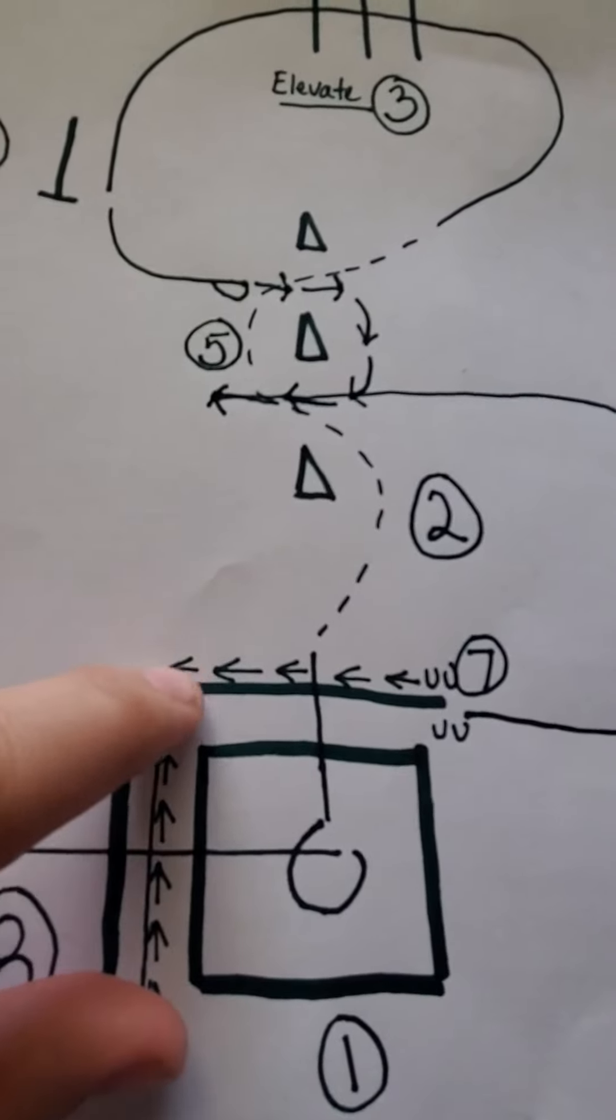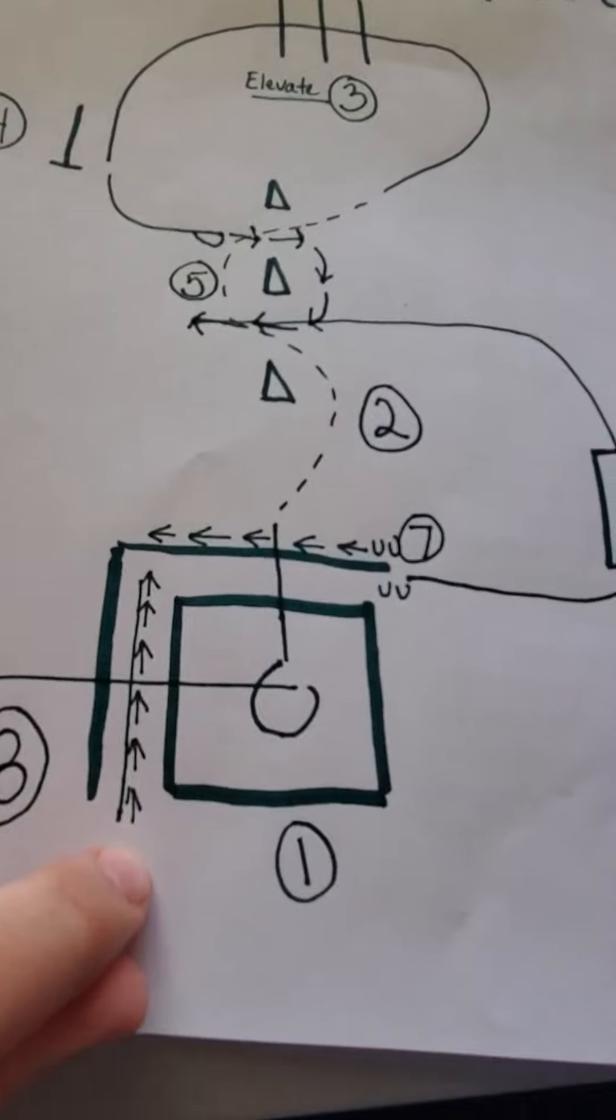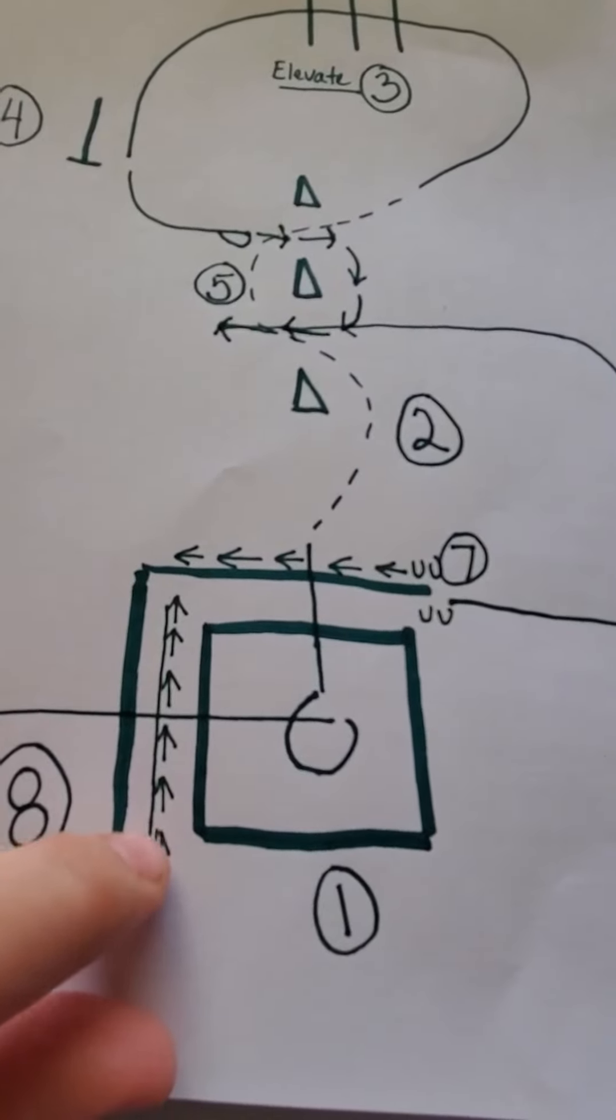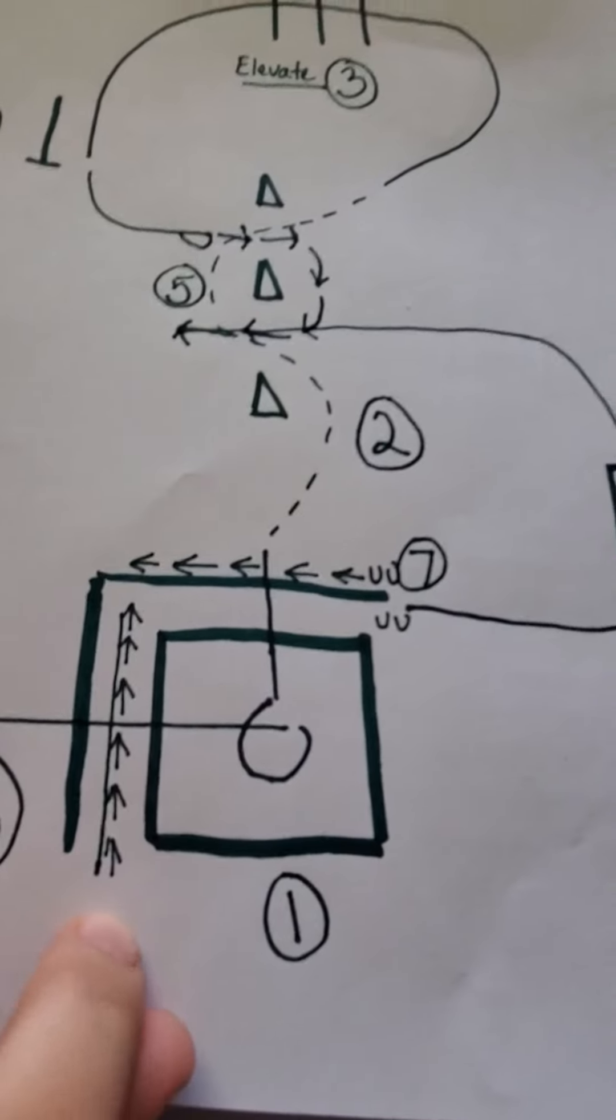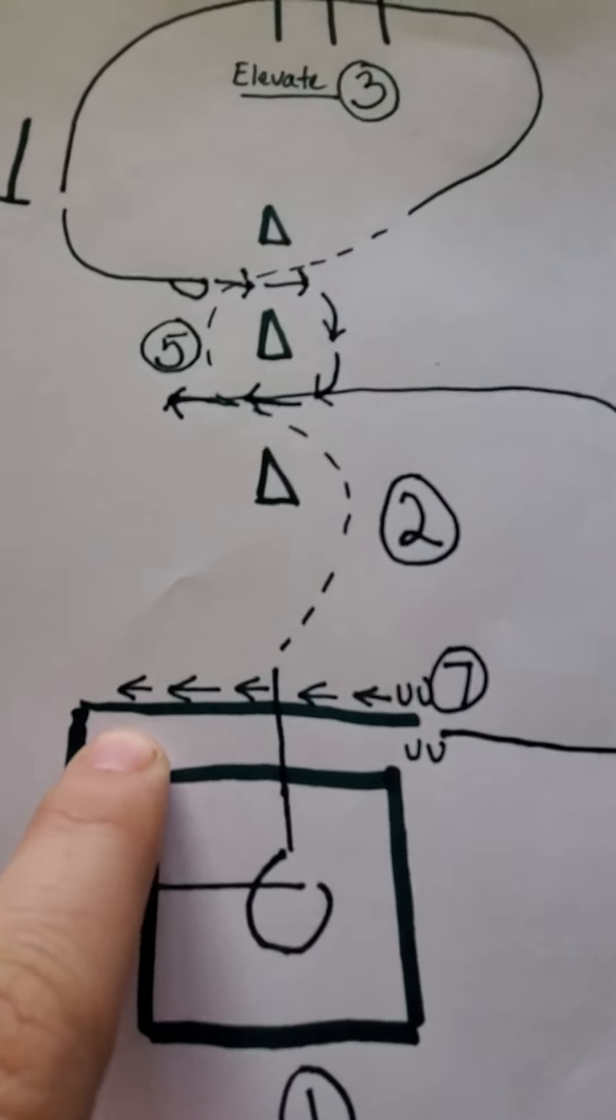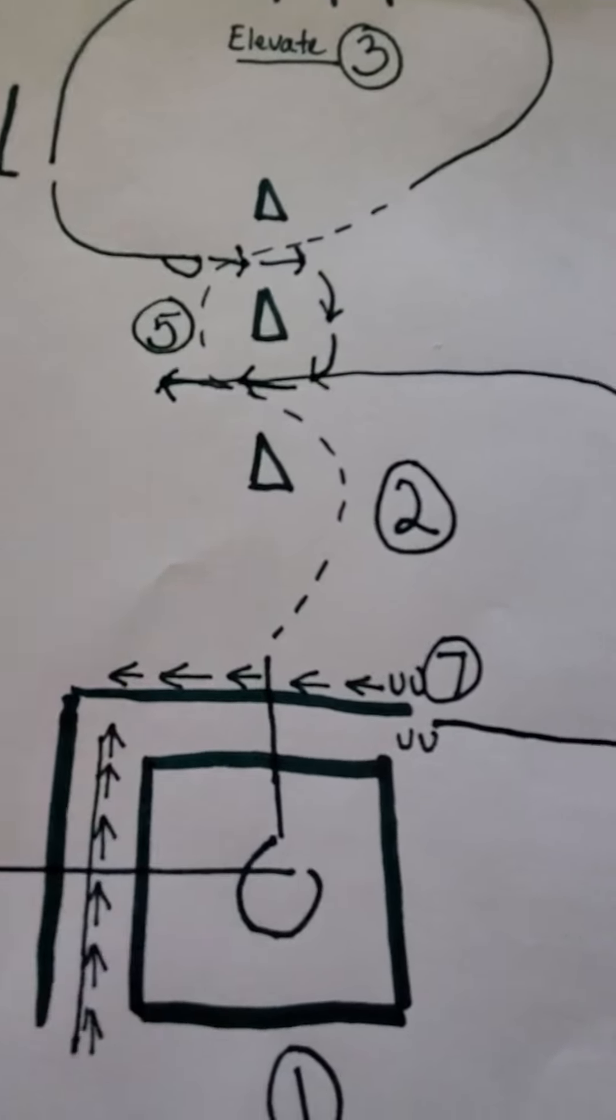Then you're going to walk over that pole and straight out through this chute until the hind feet are even with this pole. So you're out of that chute. Then you're going to back straight back into this corner until the back feet are inside here. And then you're done.